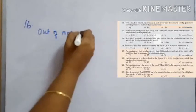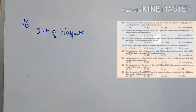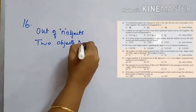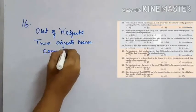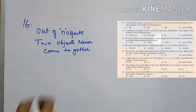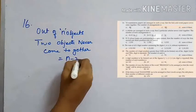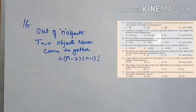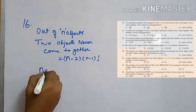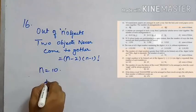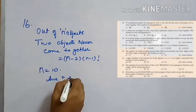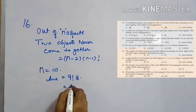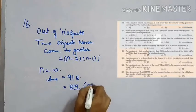10 examination papers are arranged such that the best and the worst paper never come together. We have a shortcut formula: out of n objects, two objects never come together gives n minus 2 into n minus 1 factorial. Here n is equal to 10, so substituting we get 9 factorial into 8, which can also be written as 8 into 9 factorial. Option C is the answer.